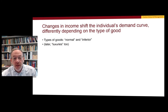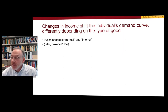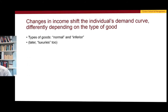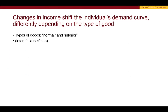Our next topic is income and individual demand. Changes in income shift the individual's demand curve differently depending on the type of good. The types of goods we're thinking about here — let's start with two. One is called a normal good, another is called an inferior good. A little bit down the road we'll talk about something called luxuries as well.